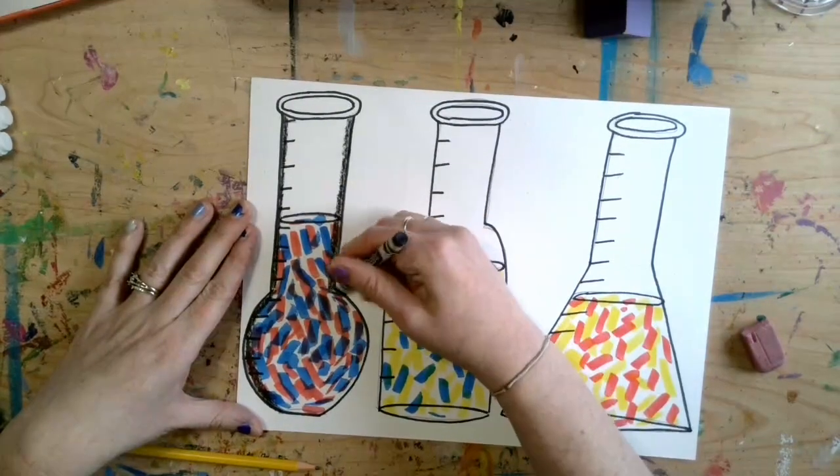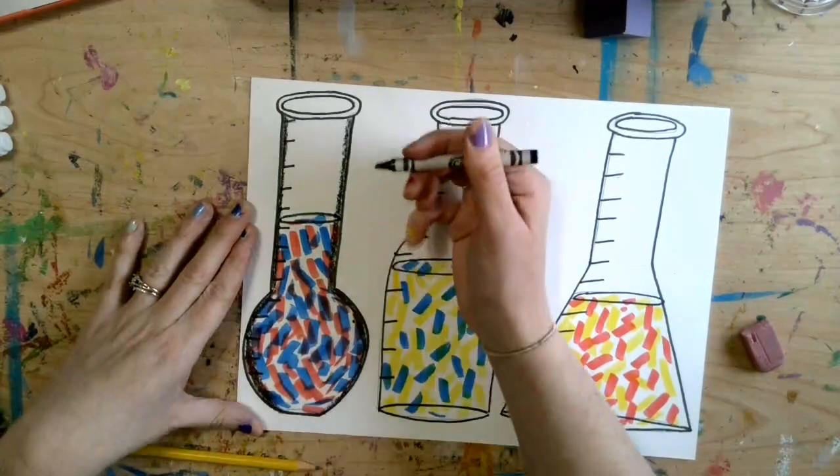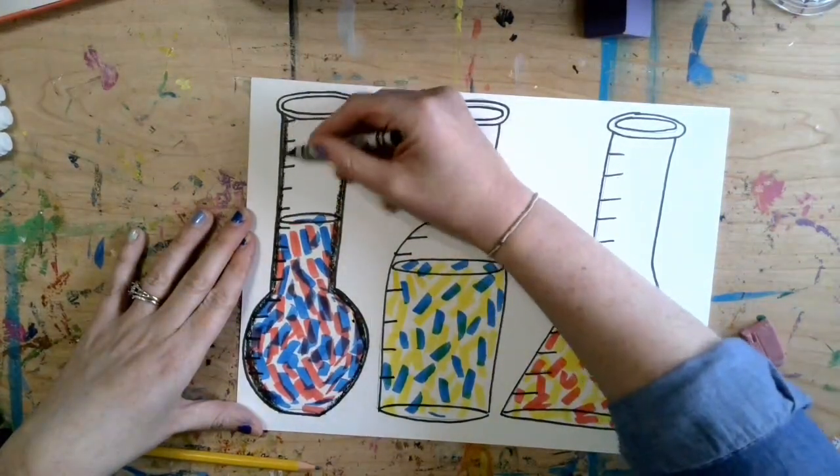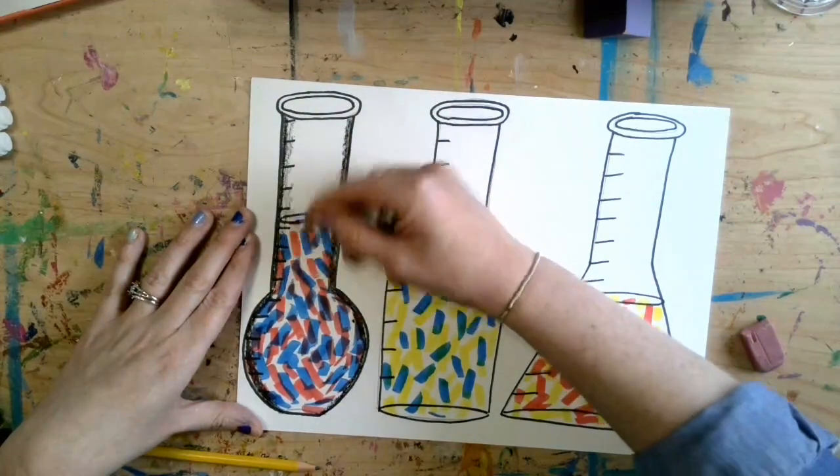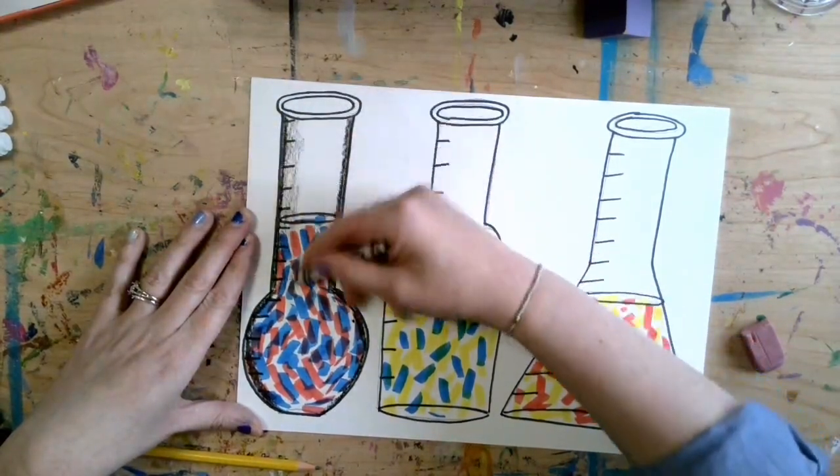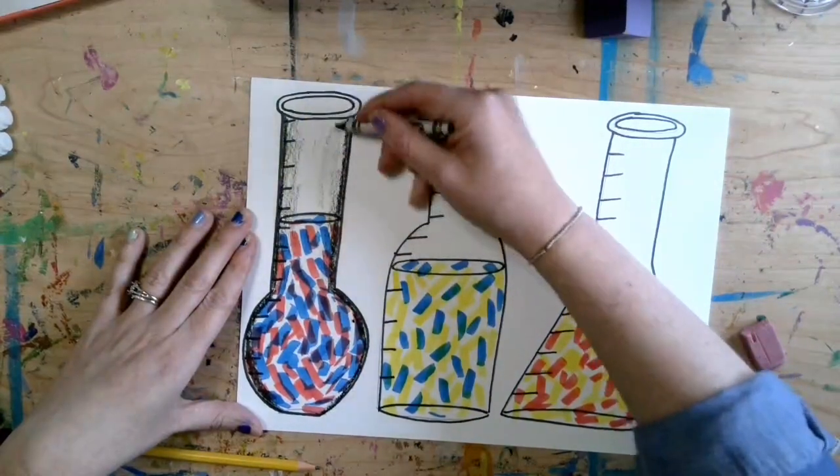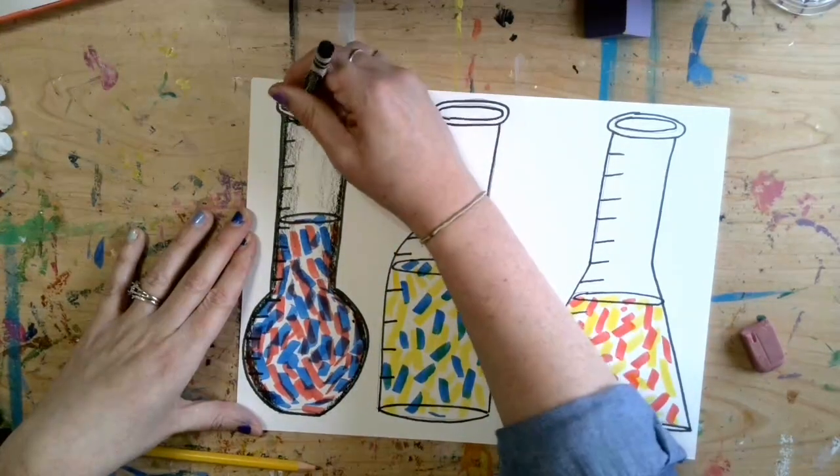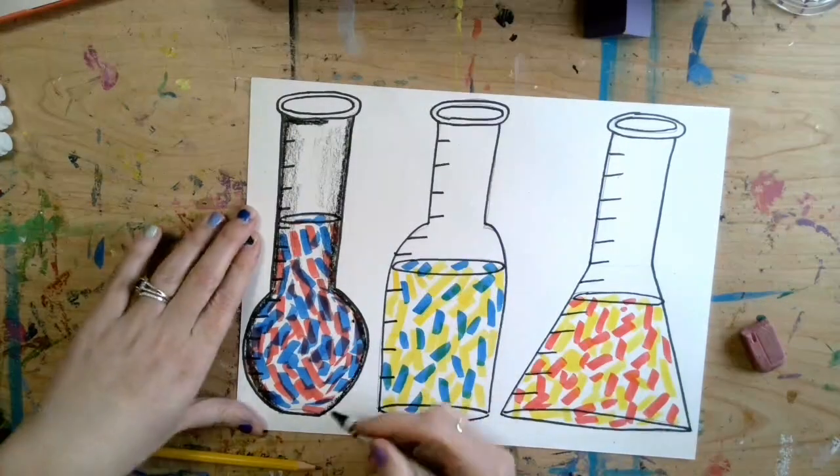So I'm going with a dark value around the edge, and then I want to lighten up the value so I'm going to go really lightly, like I'm tickling the paper, that tickles towards the inside. And I might not even have them touch, I'm leaving a little bit of white there. I'm going to do a little dark under the lip there to make it look like it's popping out.